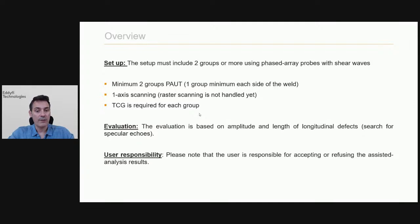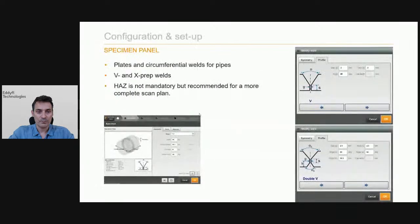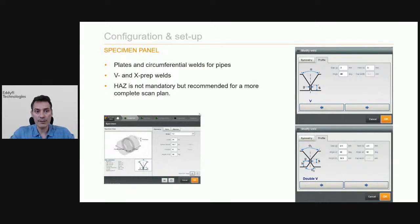You need a time-corrected gain for each group you are using, because the feature is based on amplitude and length of the defects. You need TCG to set a reference level. It is up to the operator at the end to accept or refuse the results of the analysis feature. The type of specimen handled today includes plate and pipes for circumferential welds. We can deal with V and X weld prep, and you can include the heat affected zone — not mandatory, but recommended to define your scan plan.